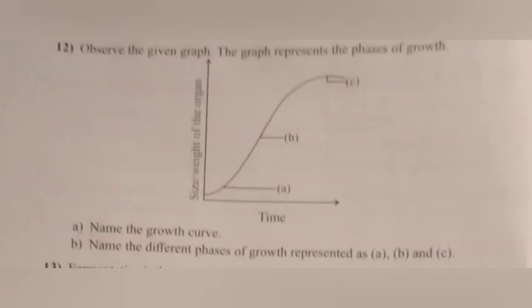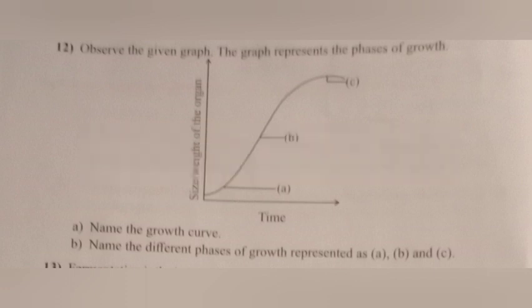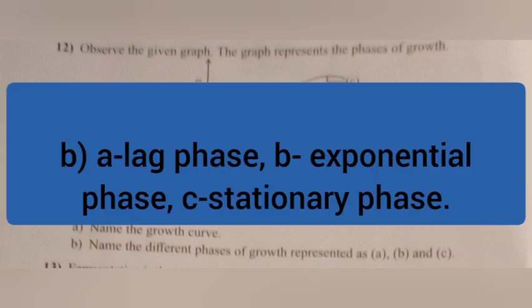Question 12. Observe the given graph representing phases of growth. A. Name the growth curve. Answer: Geometric growth curve. B. Name the different phases of growth represented as A, B and C. Answer: A — Lag phase; B — Exponential phase; C — Stationary phase.